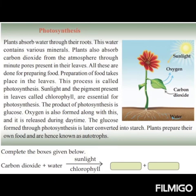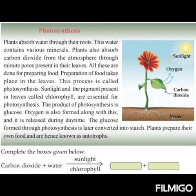Now, did you understand what photosynthesis is? Here we will see how photosynthesis takes place. The first step is: plants absorb water through their roots. The roots of the plant absorb water. This water contains various minerals, so the water which the roots absorb contains various minerals.